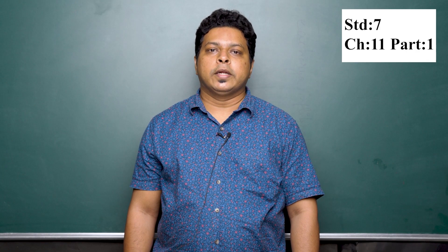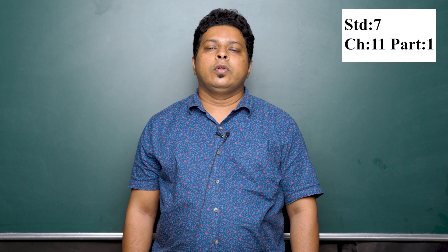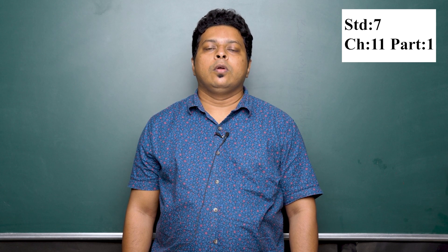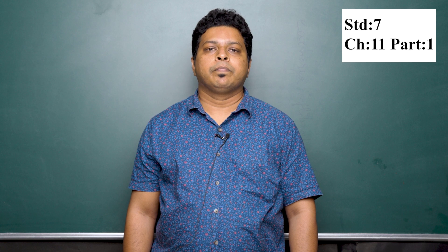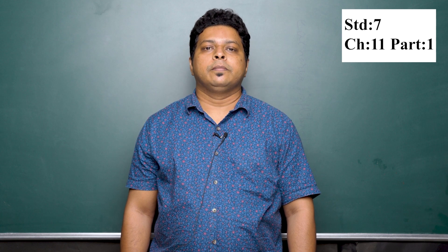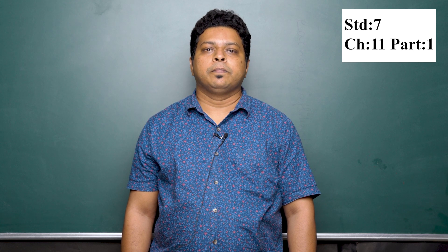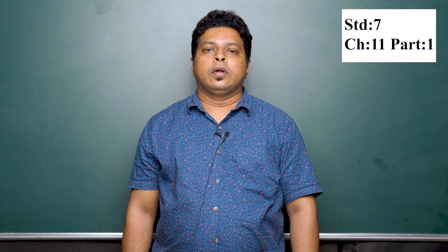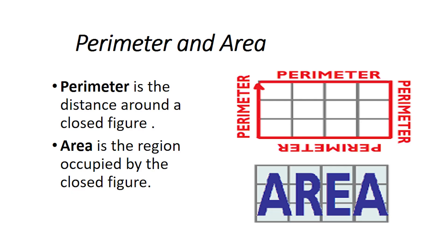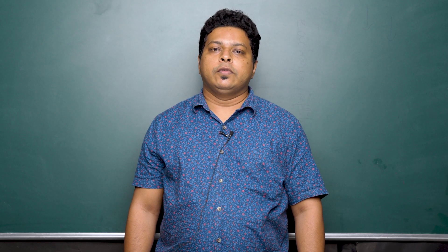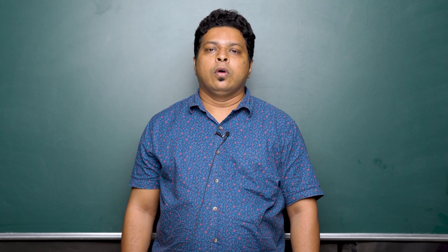Welcome dear students to this maths class. Today we are going to learn an interesting topic called perimeter and area. In class 6 you have already learned how to calculate the perimeter and area of a few figures. Perimeter is the distance around a closed figure and area is the region occupied by the closed figure.